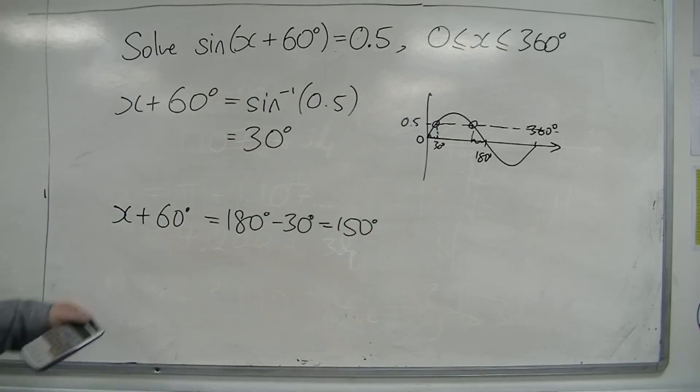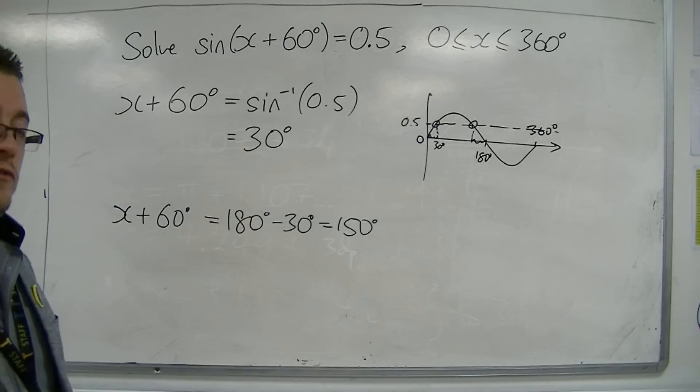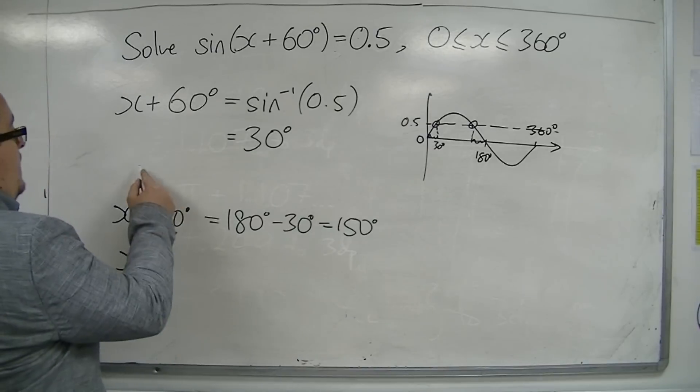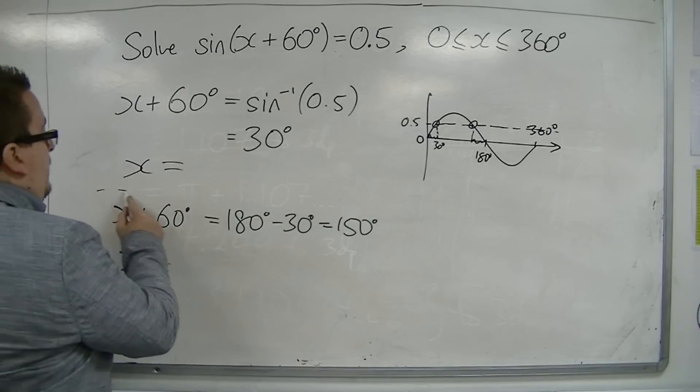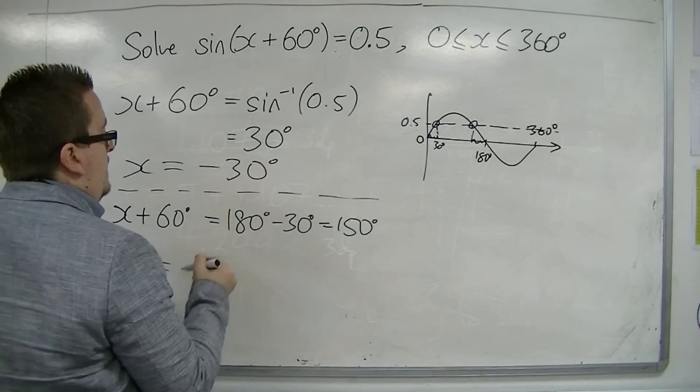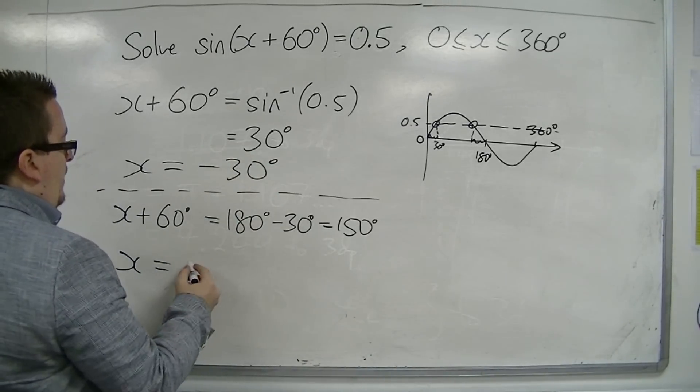So I've got these two possibilities. I've got x plus 60 equals 30 and x plus 60 equals 150. Now if I subtract that 60 from both sides, then I get minus 30 here and 150 take away 60 is 90.